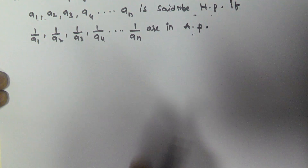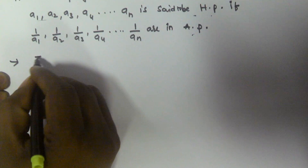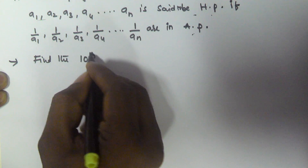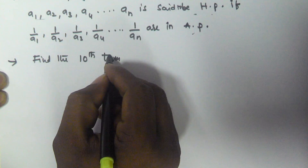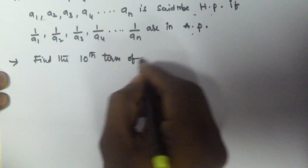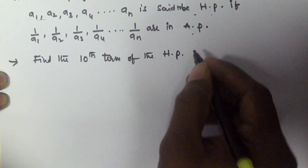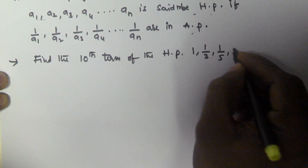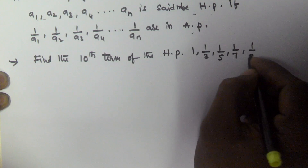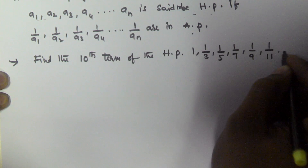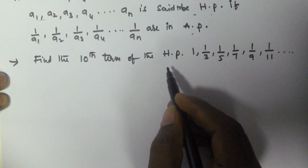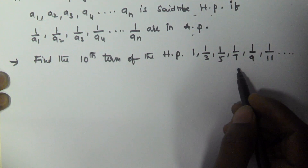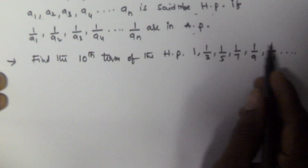We will see one problem based on this. Find the tenth term of the harmonic progression: 1, 1/3, 1/5, 1/7, 1/9, 1/11, and so on. We have to find the tenth term in this harmonic progression.